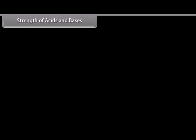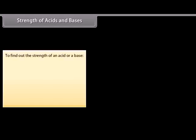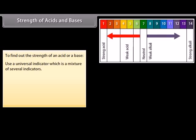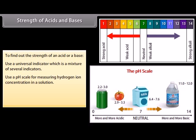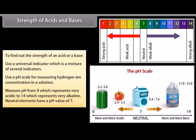You need to use a universal indicator to find the amounts of ions present in a solution or to find out how strong an acid or base is. The universal indicator is a mixture of several indicators. It shows different colors at different concentrations of hydrogen ions in a solution. A pH scale is a scale of measuring hydrogen ion concentration in a solution. You can measure pH from 0, which represents very acidic, to 14, which represents very alkaline. Neutral elements have a pH value of 7.